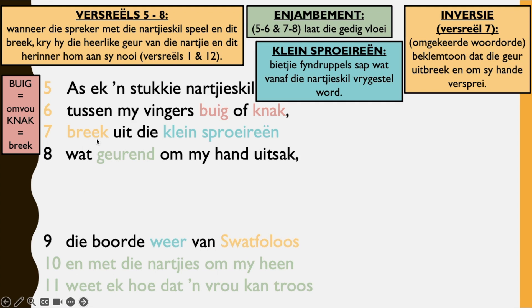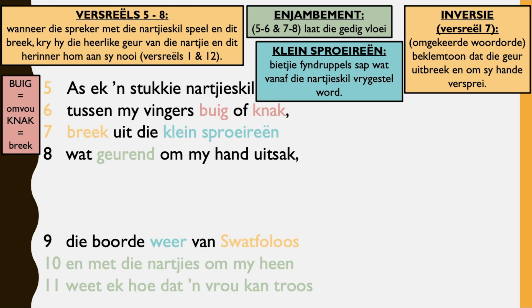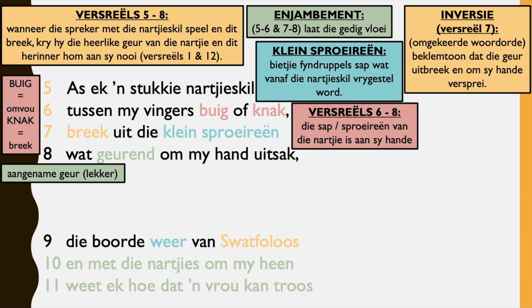And then in line 7 we have inversie. Inversie is when you switch around words in order to emphasize something specifically — you put something specific at the beginning or end. In this case it says 'breek' — because you would have rather said 'die kleinspruidien breek uit', but it's just emphasizing breek. Beklemtoon dat die geur uitbreek om sy hande versprei — it's emphasizing that this flavor spreads all over his hands and he can smell it properly, it's a strong scent. And then gerend is 'n aangename geur — it's a nice flavor, it's good, it's not something bad. Fasiaels 6-8 — die sap of spruidien van die narkies aan sy hande — the juice or mist from the narkie is over his hands.